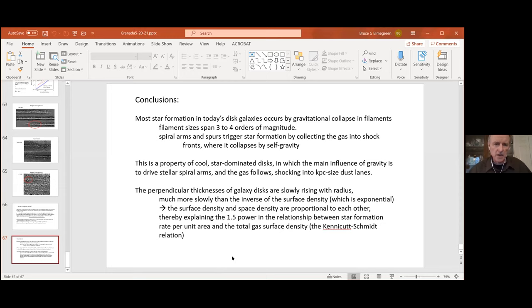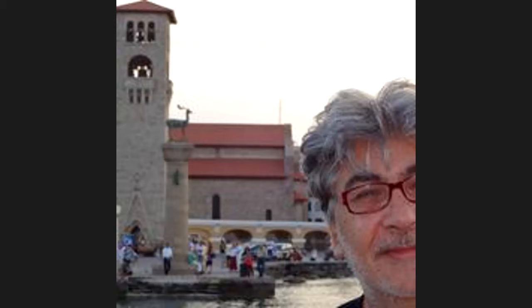So to summarize, most star formation in today's disk galaxies seems to occur by this process of collapse in filaments, and that's on scales ranging over three to four orders of magnitude. Spiral arms and spurs in those arms and even big shells trigger star formation by collecting the gas into shock fronts, where it indeed has time to collapse by self-gravity.